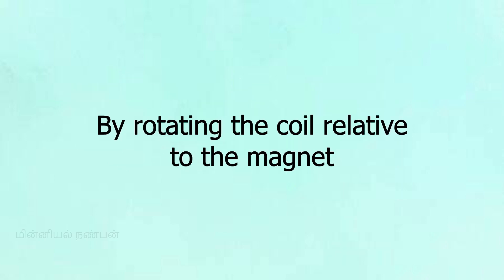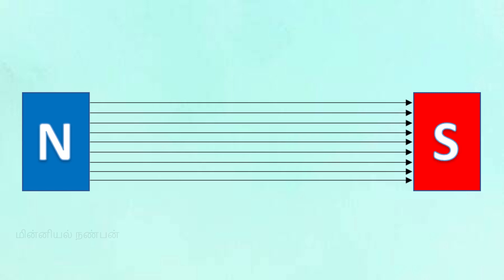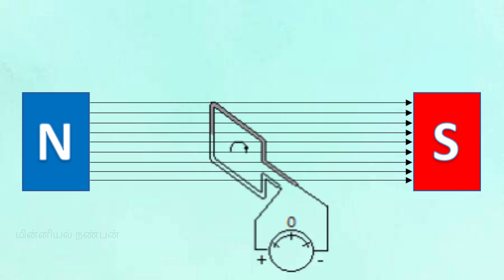The third method is by rotating the coil relative to the magnet. As the coil rotates within the magnetic field, the magnetic flux through the coil changes continuously, inducing an EMF. This is the main principle behind the working of an electric generator.